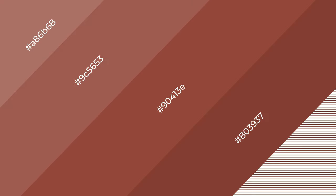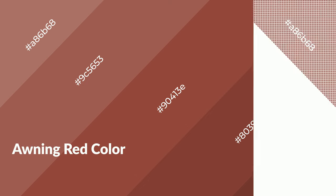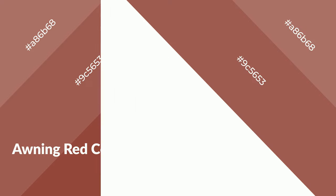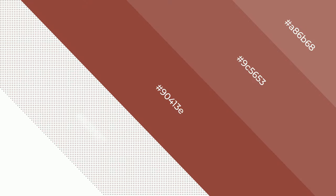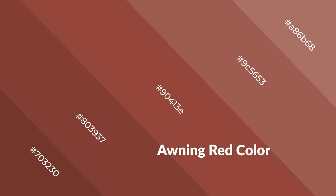Awning red is a warm color and it emits cozier and active emotions. Warm colors are symbols of warmth, fire, heat, and sunshine. It also evokes joy, passion, love, and even anger. You can see them used in restaurants and gyms.